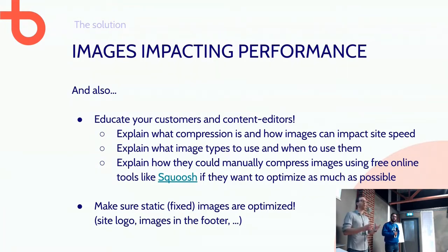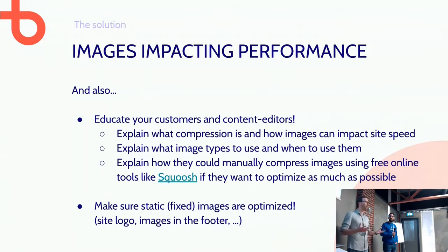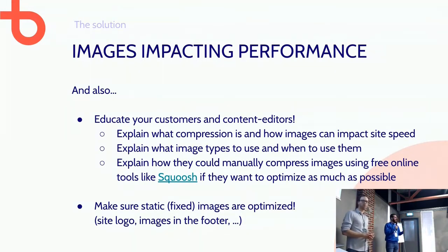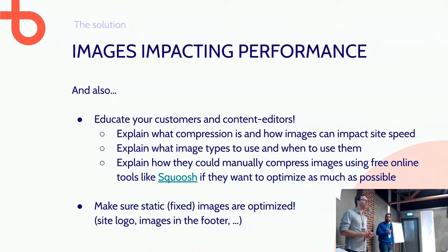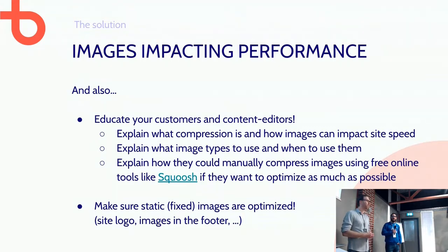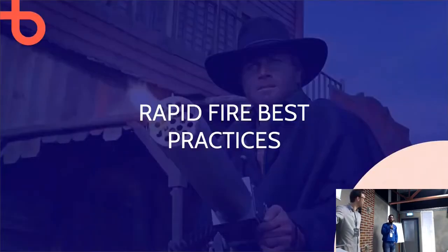Images have a big impact on website speed, especially on overview pages with 20 items and 20 images that all load together. You don't want every thumbnail to be 100 kilobytes — your webpage could be one or two megabytes from images alone. Also educate your front-end and back-end developers, because static fixed images in the theme aren't editable by clients. A developer will ask for a logo, receive a 5MB PNG, rescale it in the header, and every page becomes 5MB by default. Make sure your static fixed images are also well optimized.